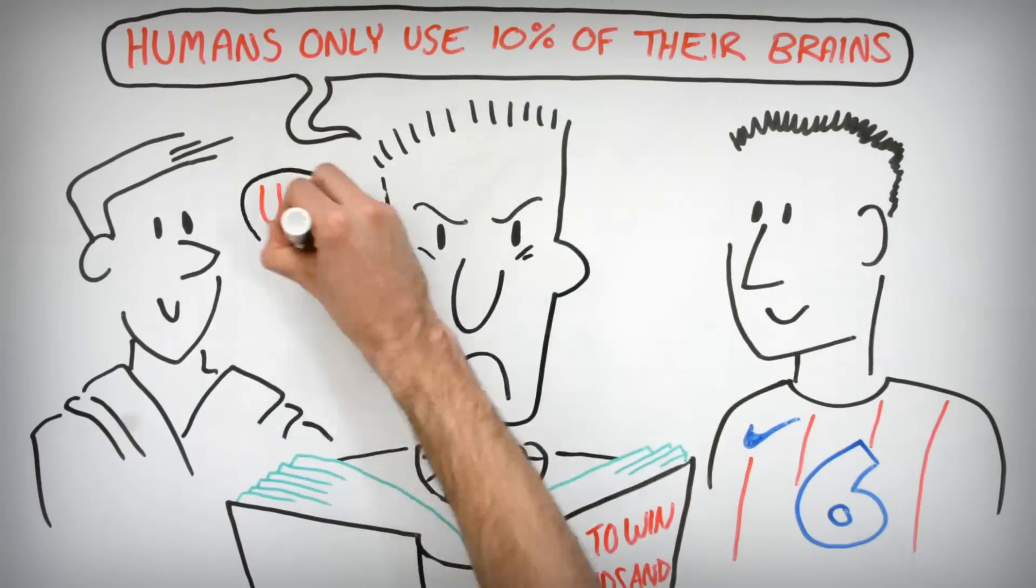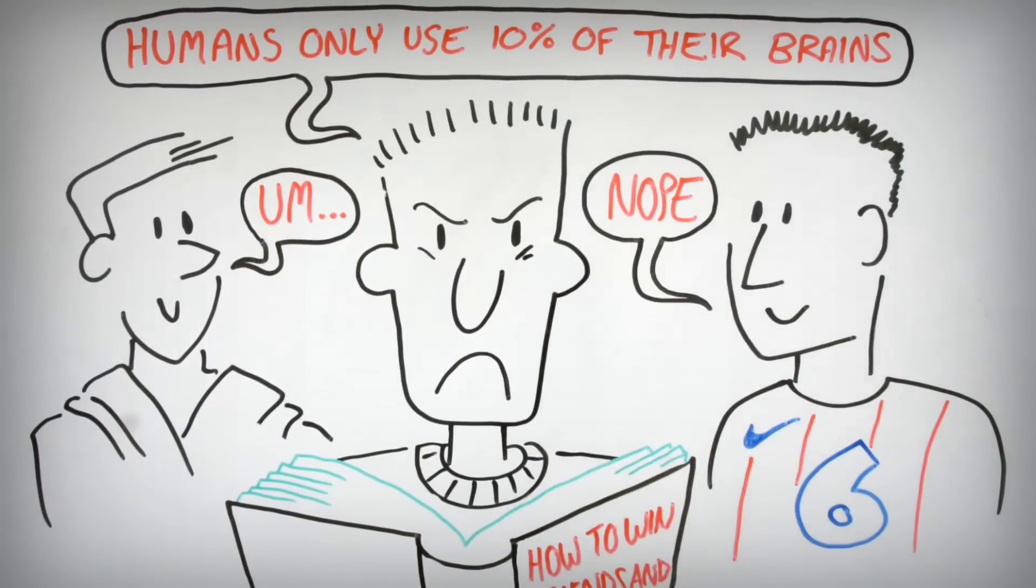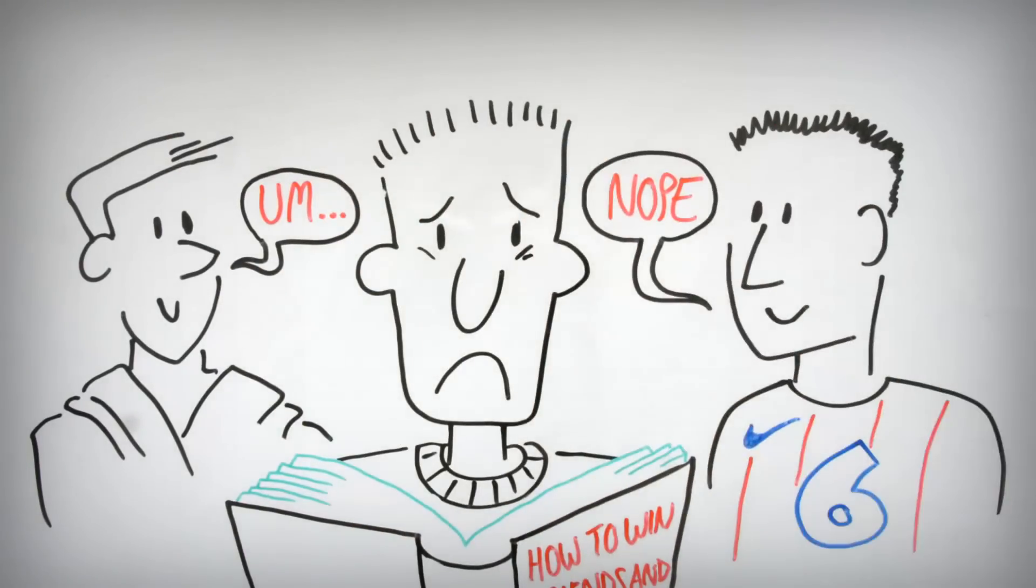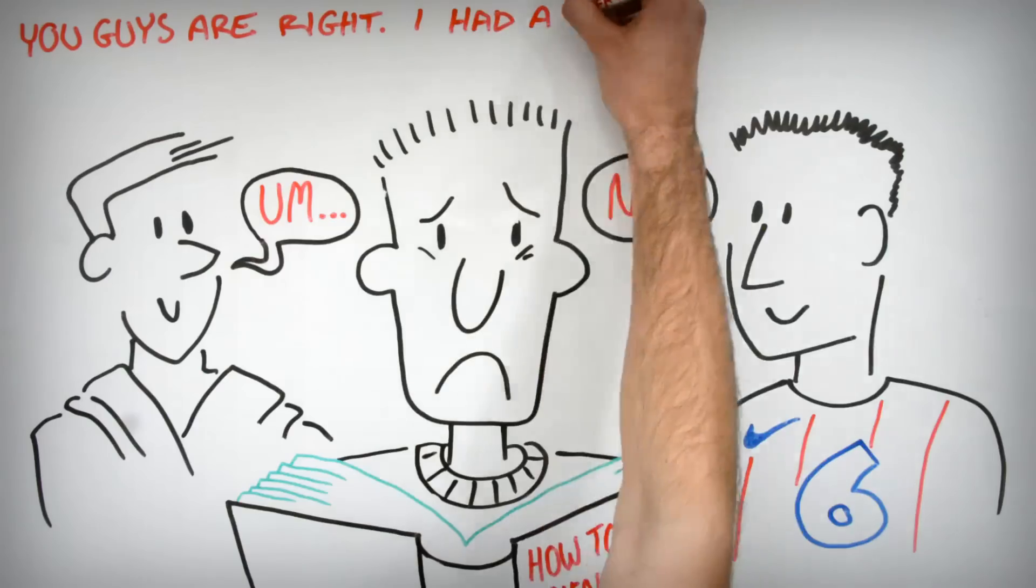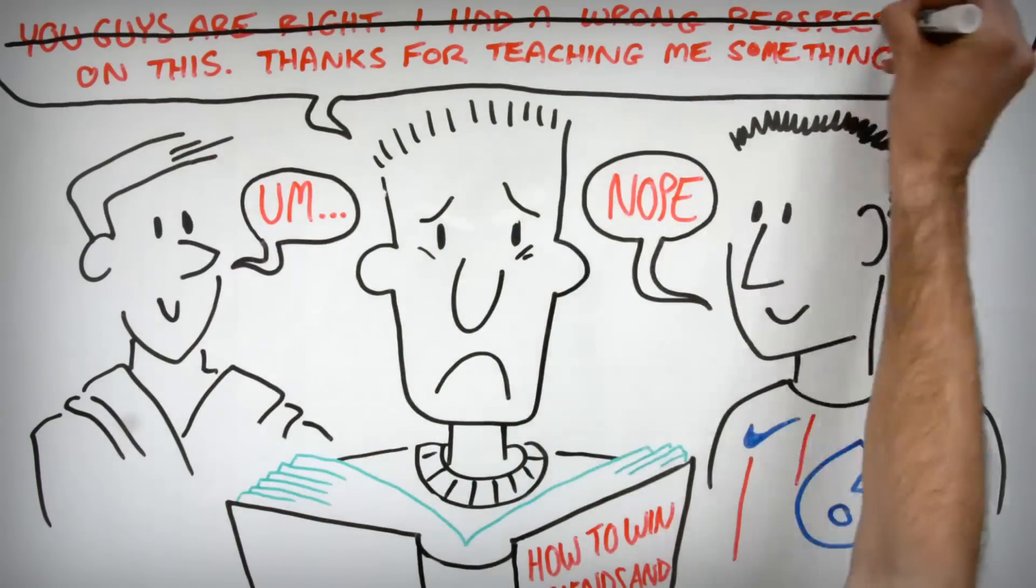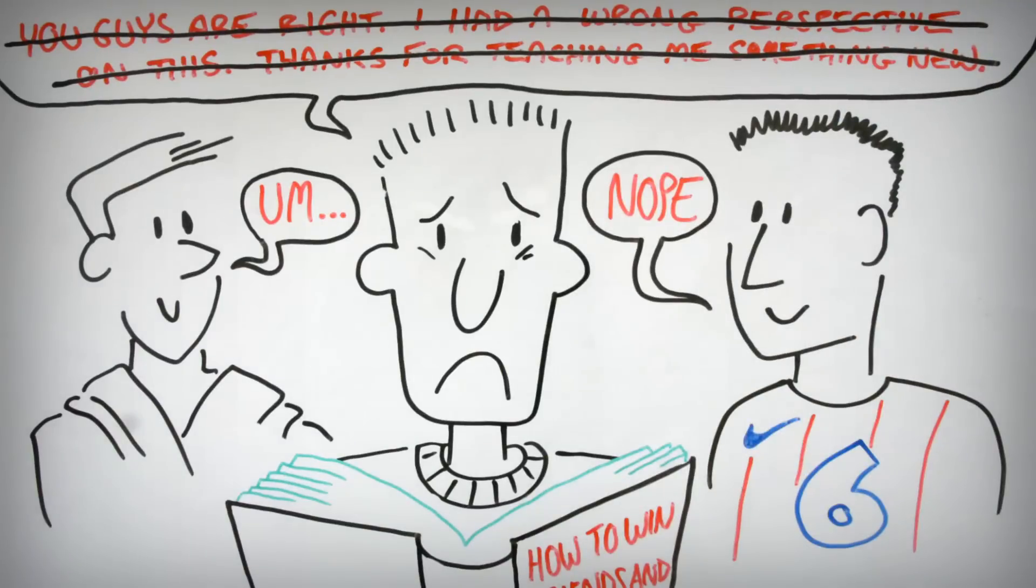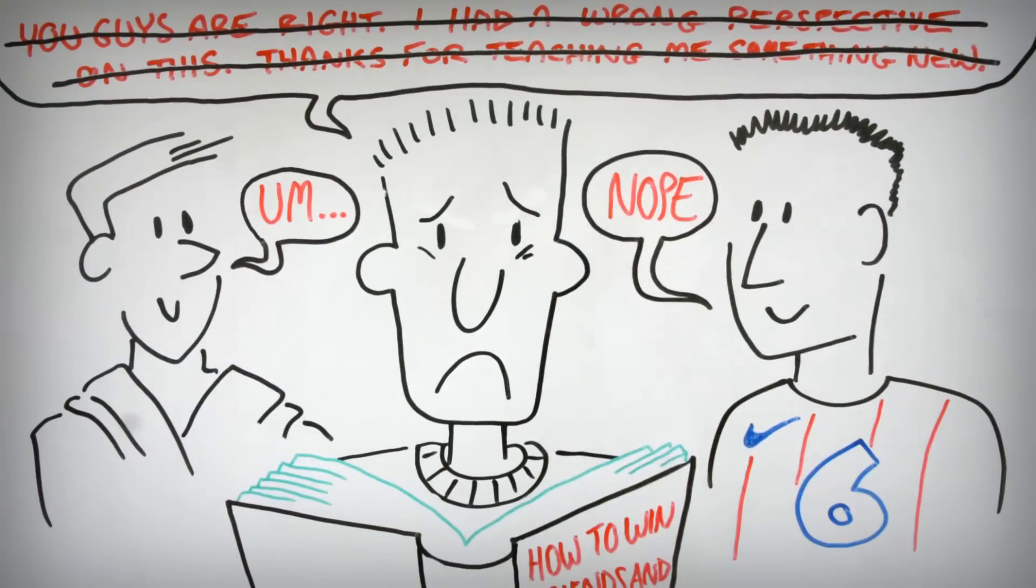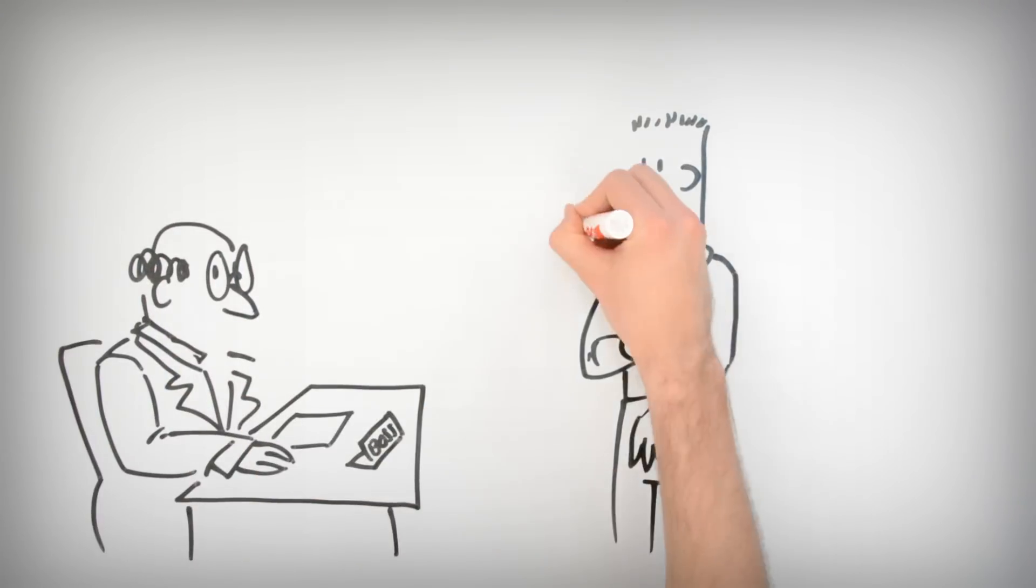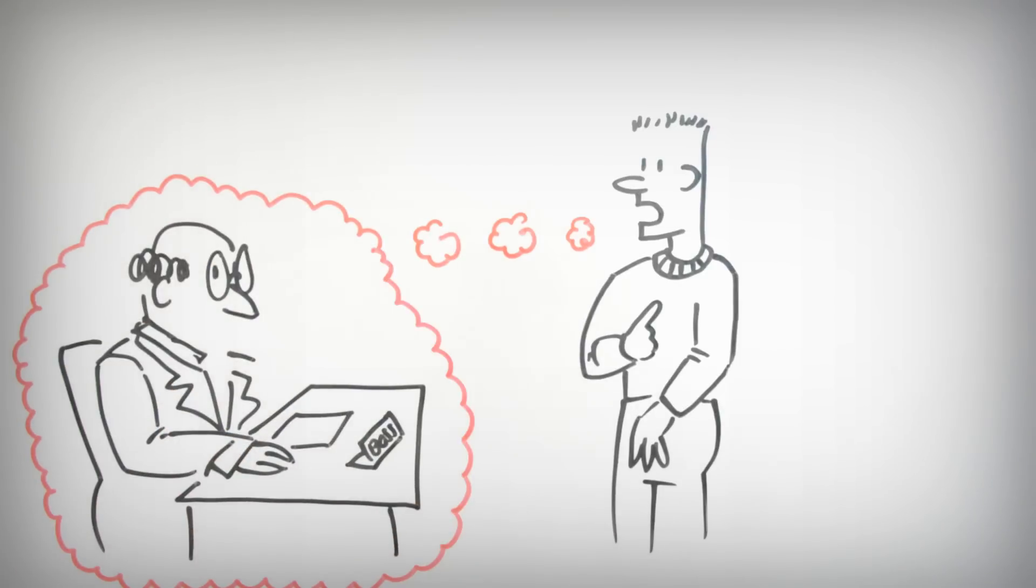Don't say something respectable like 'You guys are right, I had a wrong perspective on this, thanks for teaching me something new.' No, don't do that. That will actually get rid of any possible embarrassment and make people respect you. And finally, work hard at cultivating the inability to put yourself into another person's shoes. Always think about only what you want and never appeal to the interests of the person you're dealing with.